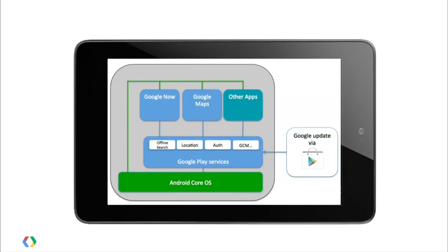You and your users have a consistent way to receive OAuth2 access tokens for Google services. Google Play Services is such a core part of our platform for the Google ecosystem that we need to make sure it's always up to date. We need to make sure we can do bug fixes and updates outside of the Android framework releases and outside of the carrier release schedule, so it's updated through the Play Store.